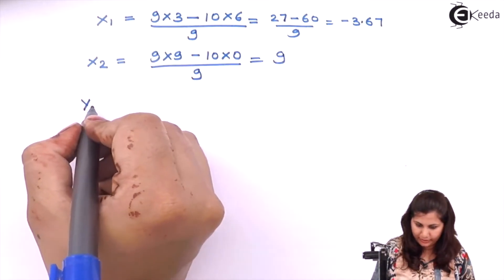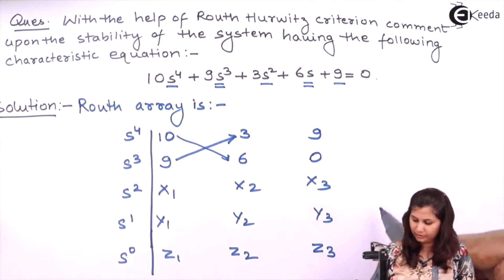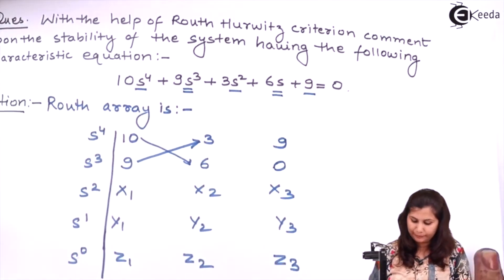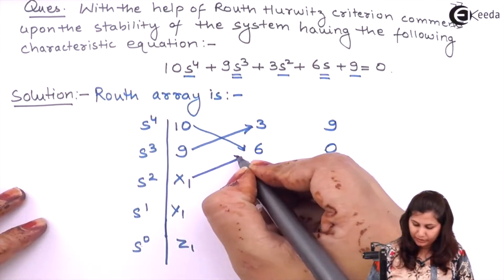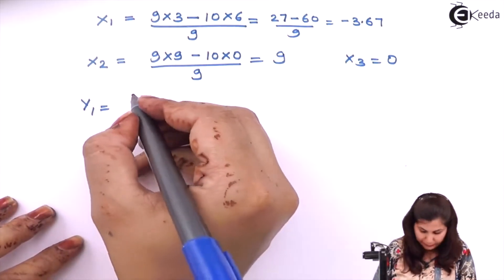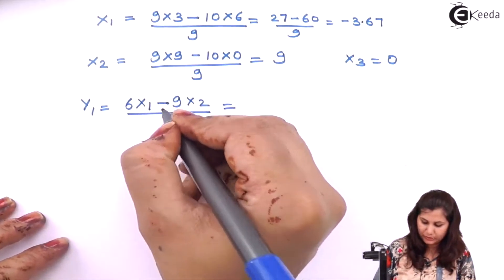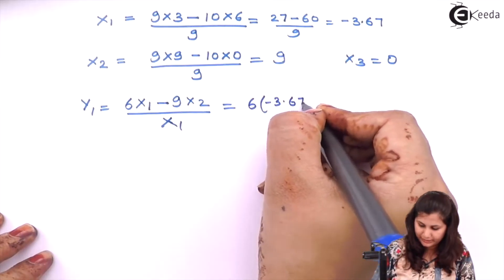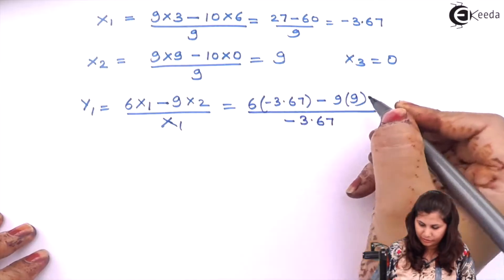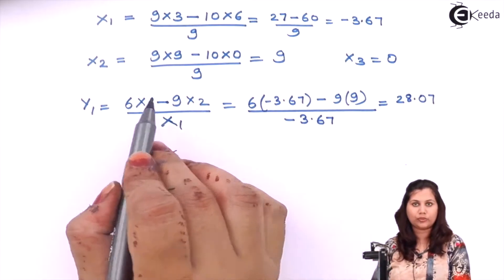x3 equals 0 because there are no further terms. Now y1 for the s¹ row is calculated as (x1×6 − 9×x2) / x1. Substituting x1 = −3.67 and x2 = 9, we get y1 = (6×(−3.67) − 9×9) / (−3.67) = 28.07.